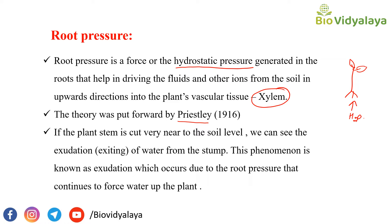If the plant stem is cut near to the soil level, we can see some exudation of water from the stem. This phenomenon is known as exudation, which occurs due to root pressure that continues to force water up the plant. Because root pressure is pulling water in an upward direction, we can see this exudation on the top of the stem cutting. This is the evidence for root pressure.